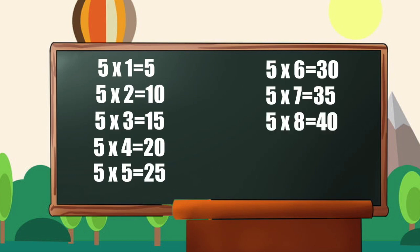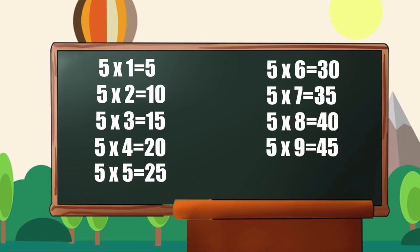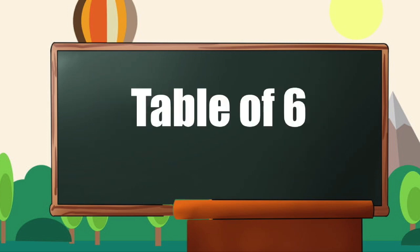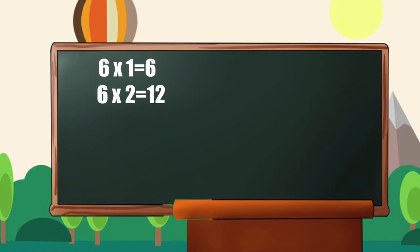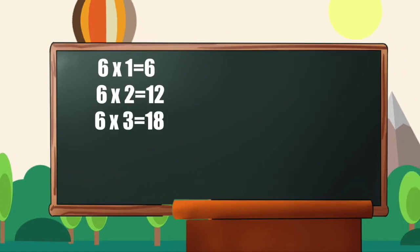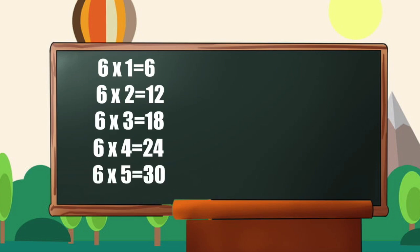5 8s are 40, 5 9s are 45, 5 10s are 50. Table of 6: 6 1s are 6, 6 2s are 12, 6 3s are 18, 6 4s are 24, 6 5s are 30, 6 6s are 36.